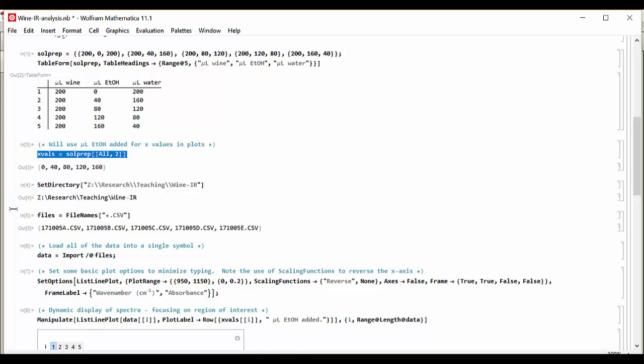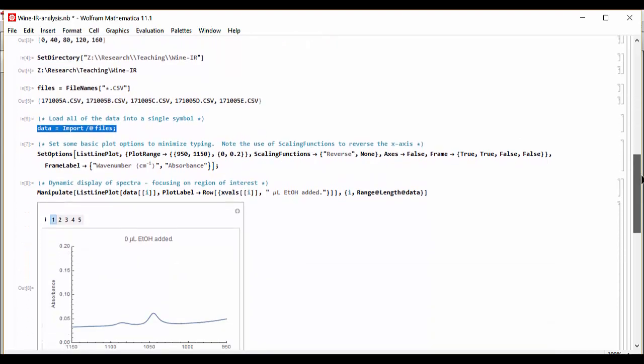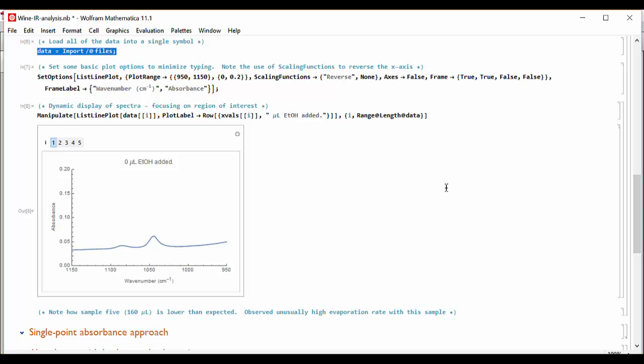After setting the directory and loading in the file names, each one of these data sets were acquired from the FTIR and saved from the FTIR instrument as CSV files. I can then fairly easily load the data such that all of the spectra are recorded in one symbol. This makes data processing a little bit easier since I'm applying the same tools to each file.